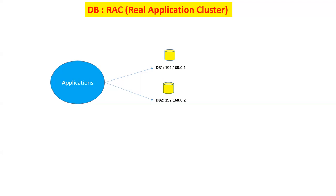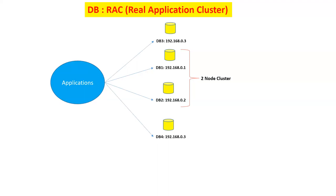We can create multiple instances of a database for high availability. If you have two database instances in the backend, it can be defined as a two-node RAC cluster. Data is shared across all instances because you will have a single copy of data. There could be four RAC nodes total, and depending on your configuration, load, and architecture, you can go up to n number of nodes in the backend. This is the basic concept of Real Application Cluster.